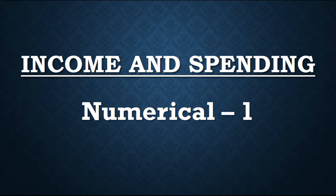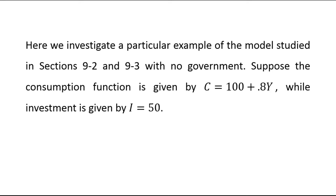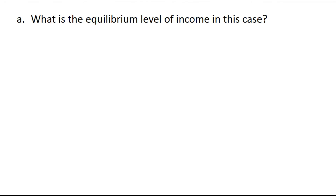Hello students. Today we are going to start with numerical questions of chapter number nine, income and spending. So let's start with question number one. Here we investigate a particular example of the model studied in sections 9.2 and 9.3 with no government. Suppose the consumption function is given by C equals 200 plus 0.8Y, while investment is given by I equals 50. The first part asks: what is the equilibrium level of income in this case? So let's start with the solution.